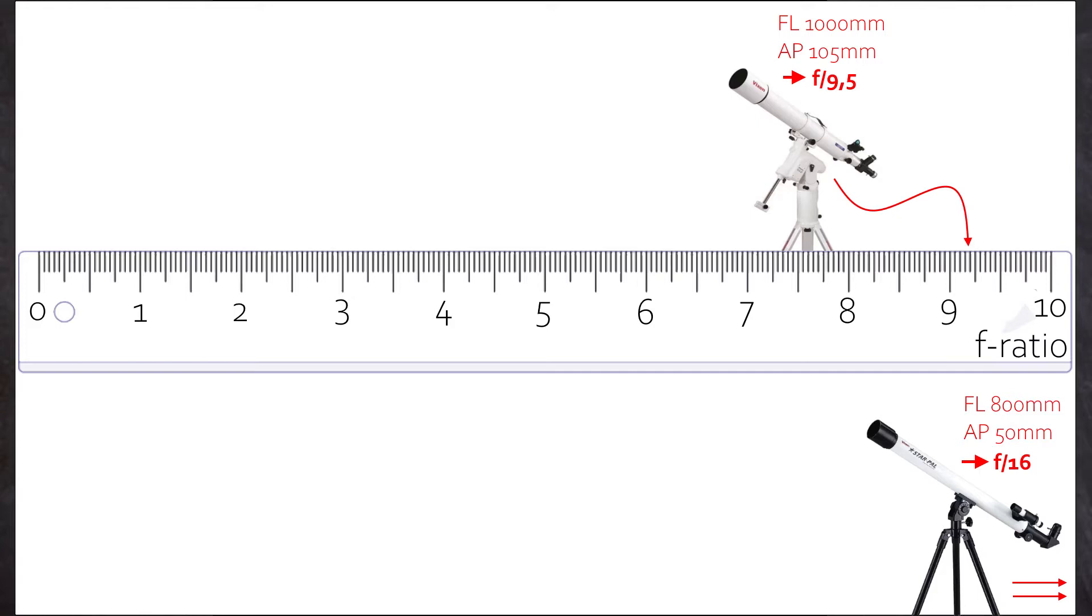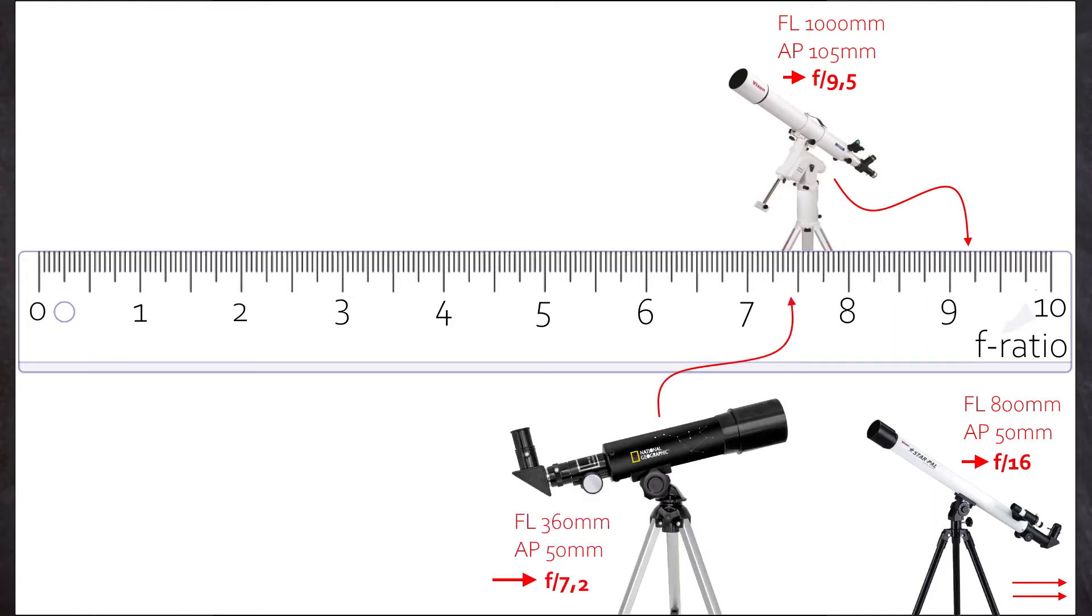So now we have a Vixen lens scope at 1000mm focal length, so longer than the first one. But because the aperture with 105mm is much wider, the f-ratio is actually lower at f9.5. So the scope is faster than the first one and hence can collect more light.